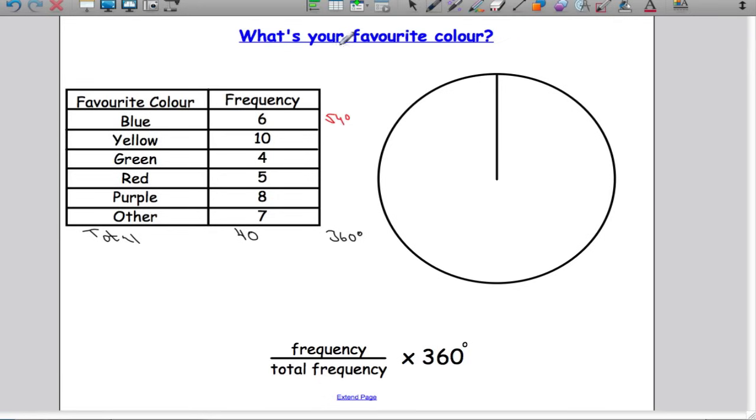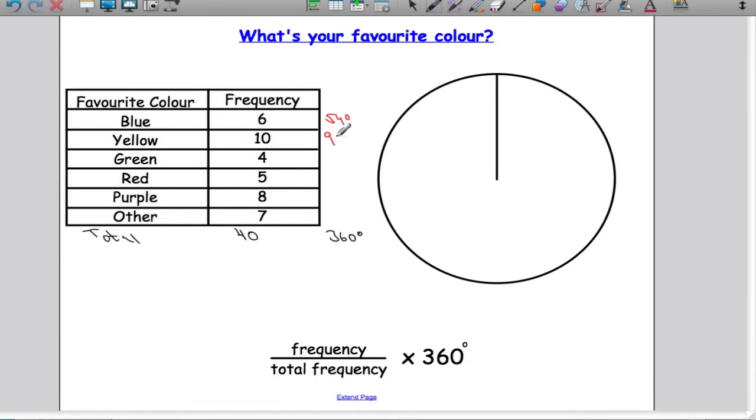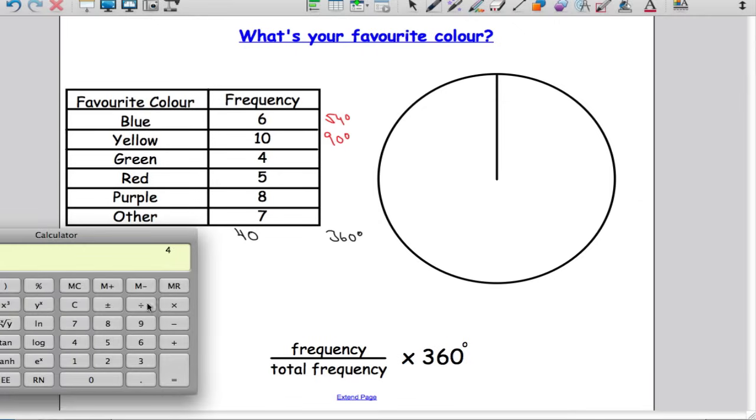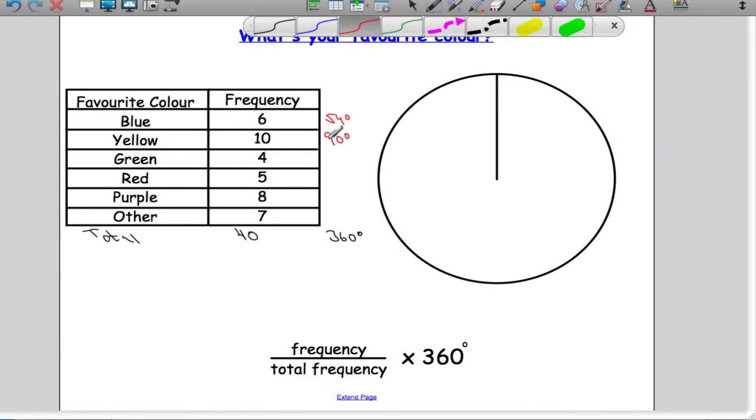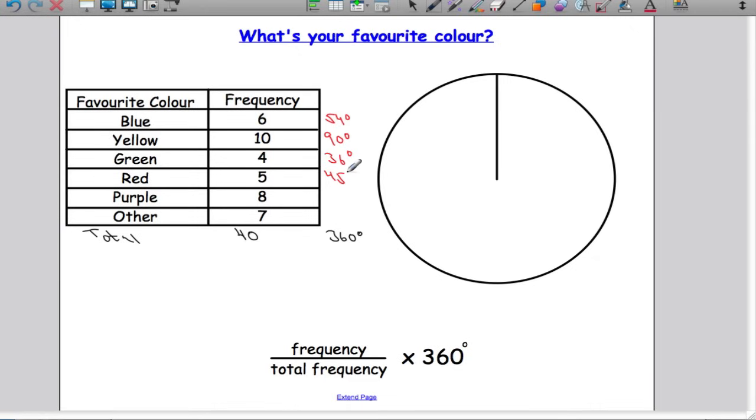Next one, yellow: 10 divided by 40, multiply our answer by 360 degrees, which gives us 90. So yellow is going to take up 90 degrees of our whole pie chart. Green will be 4 divided by 40 and multiply that by 360, which gives us 36.